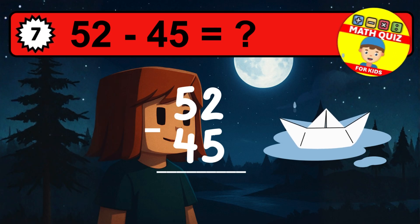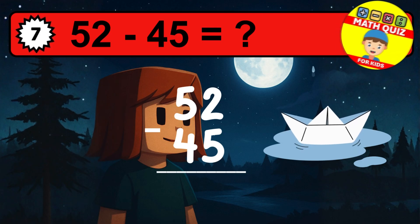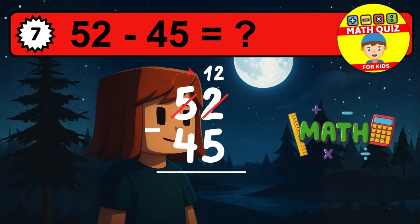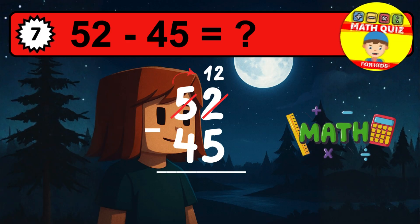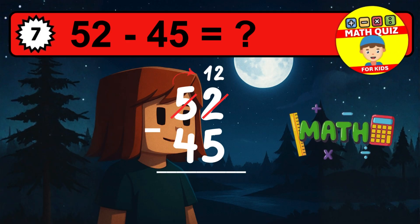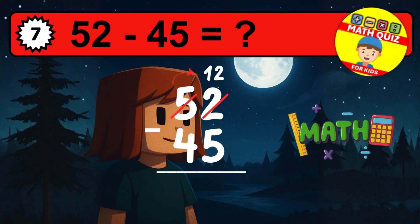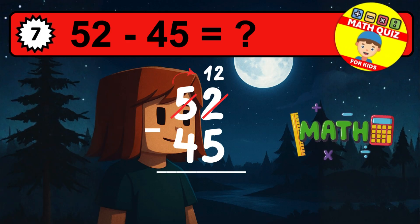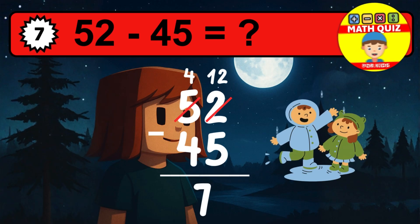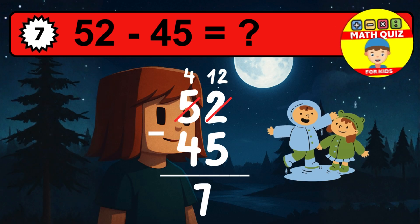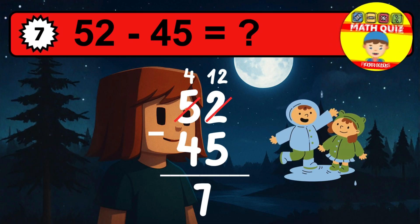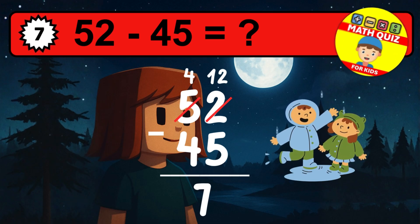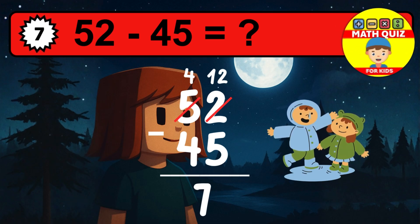Let's solve this step by step. We start with the units. Two minus five is not possible, so we need to regroup. We take one ten from the tens column. Now we have four tens, and the units become twelve. Now we subtract. Twelve minus five is seven.